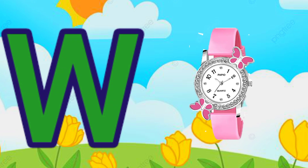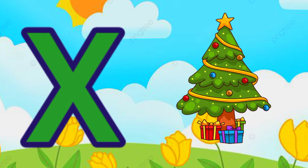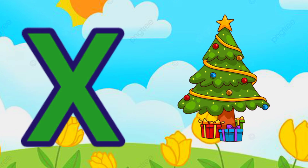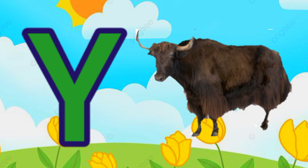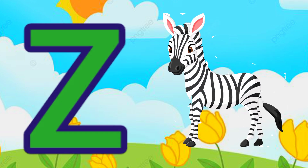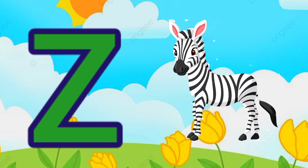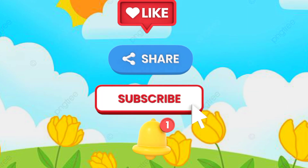B for wand, W for watch, X for Christmas tree, Y for young, Z for zebra.